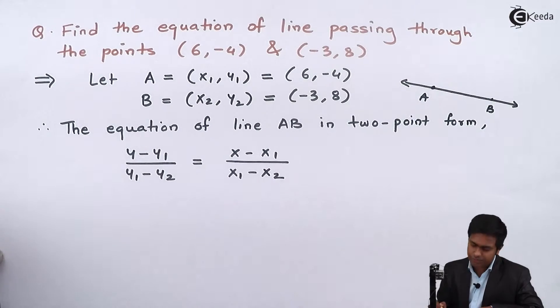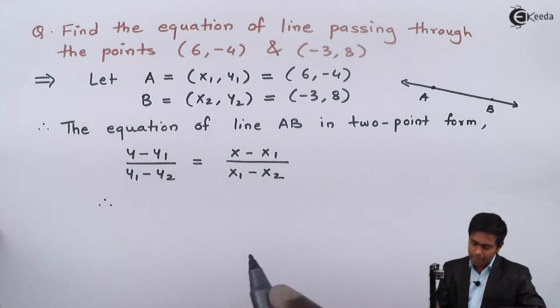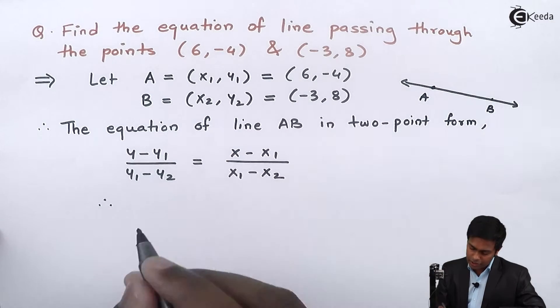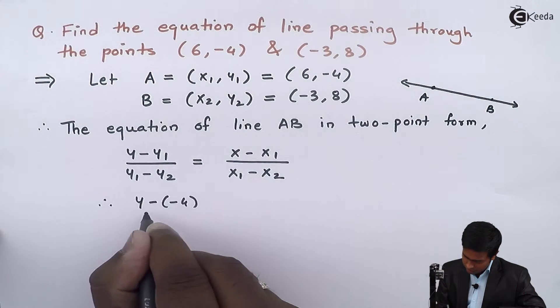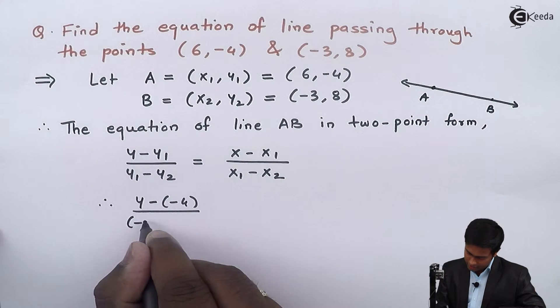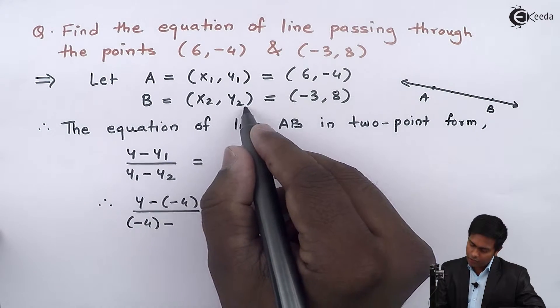Now let's substitute the values. y₁ is -4, so this becomes (y - (-4))/((-4) - y₂). The value of y₂ is 8.